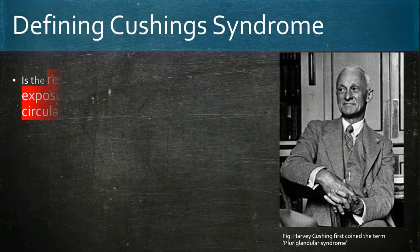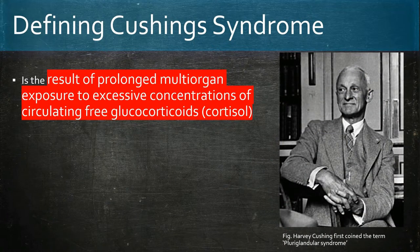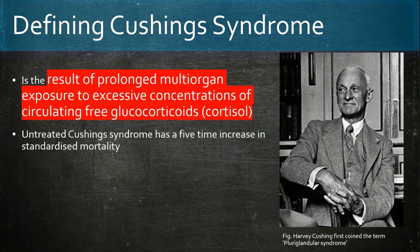Cushing syndrome refers to the exposure of organ systems to excessive free cortisol. Untreated Cushing syndrome leads to a five-times increase in standardized mortality.